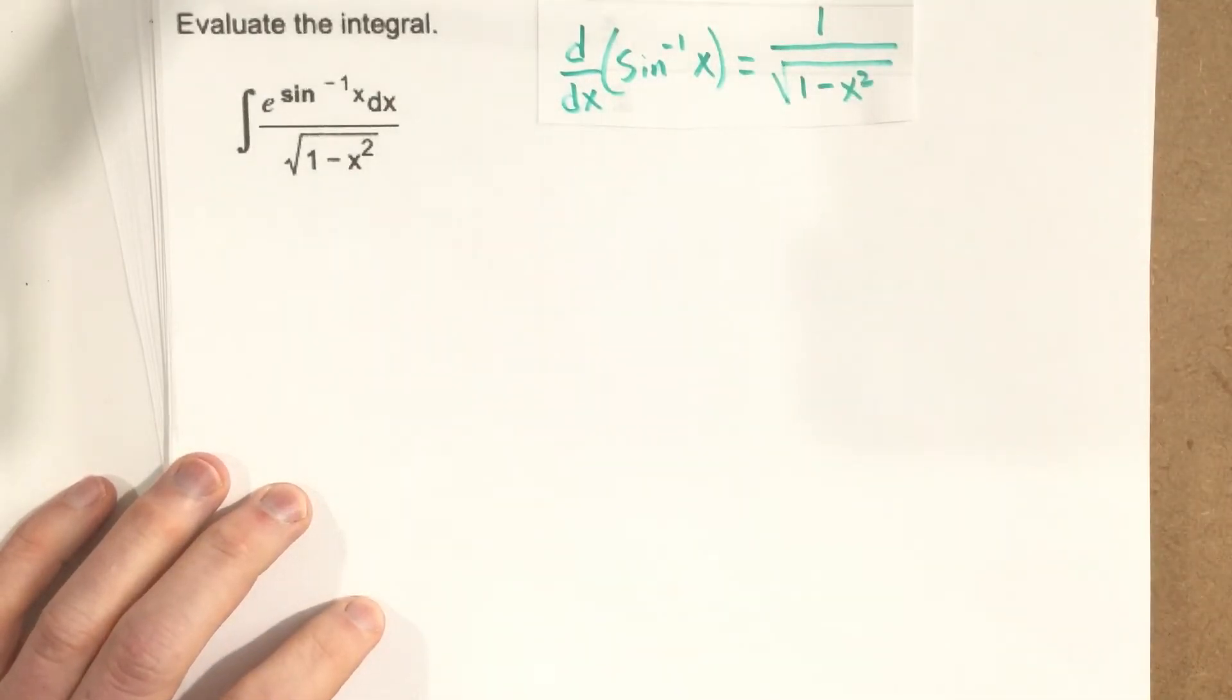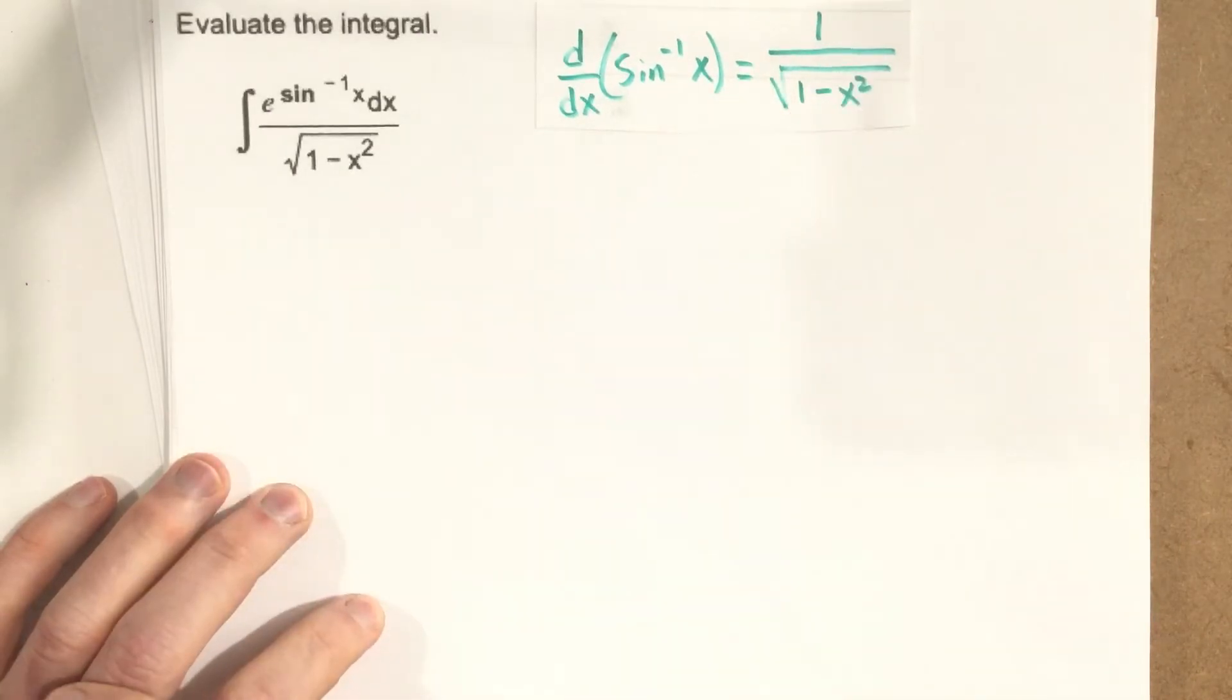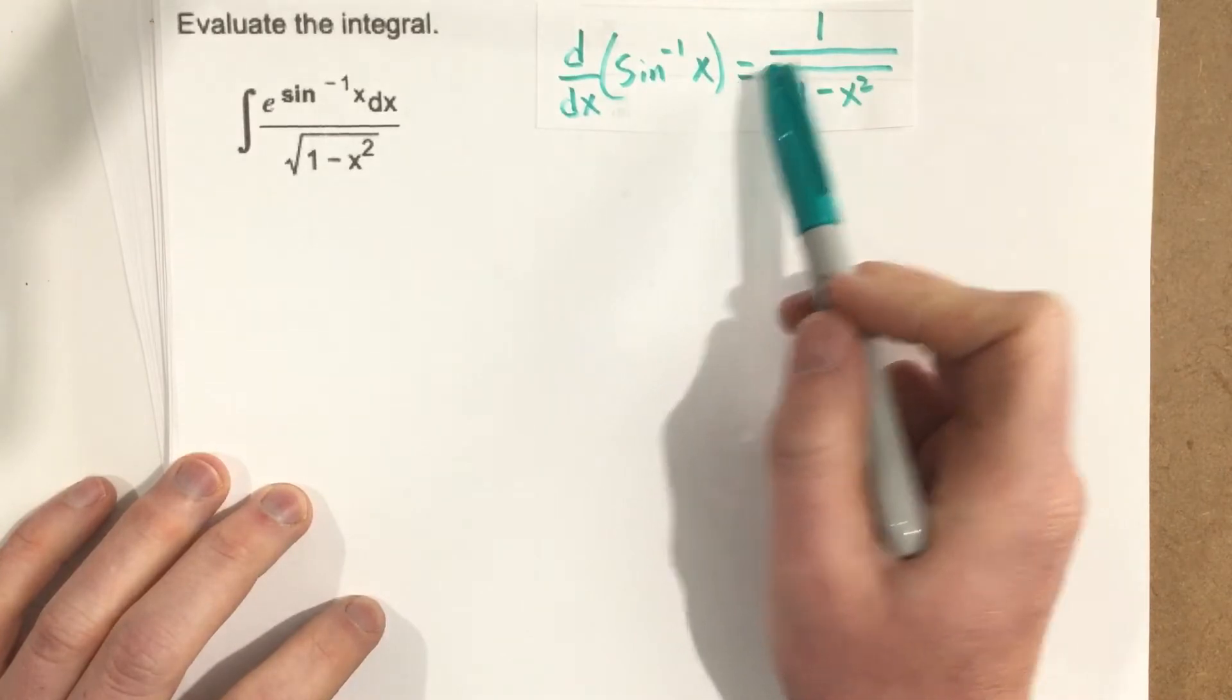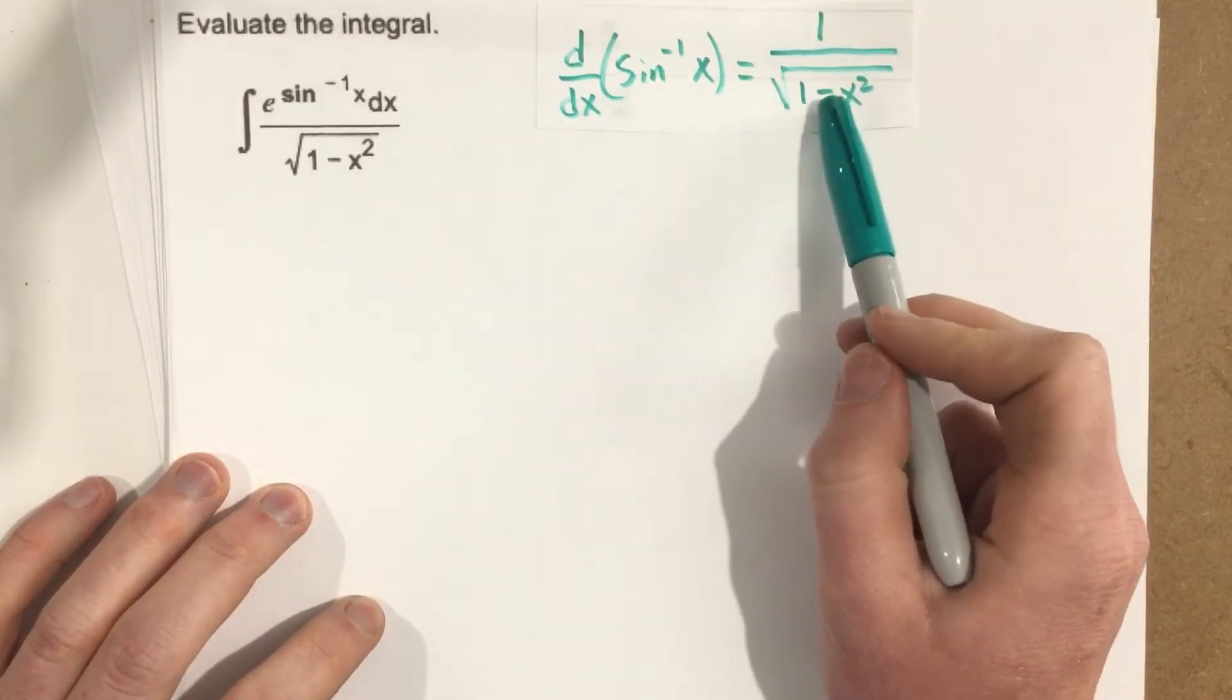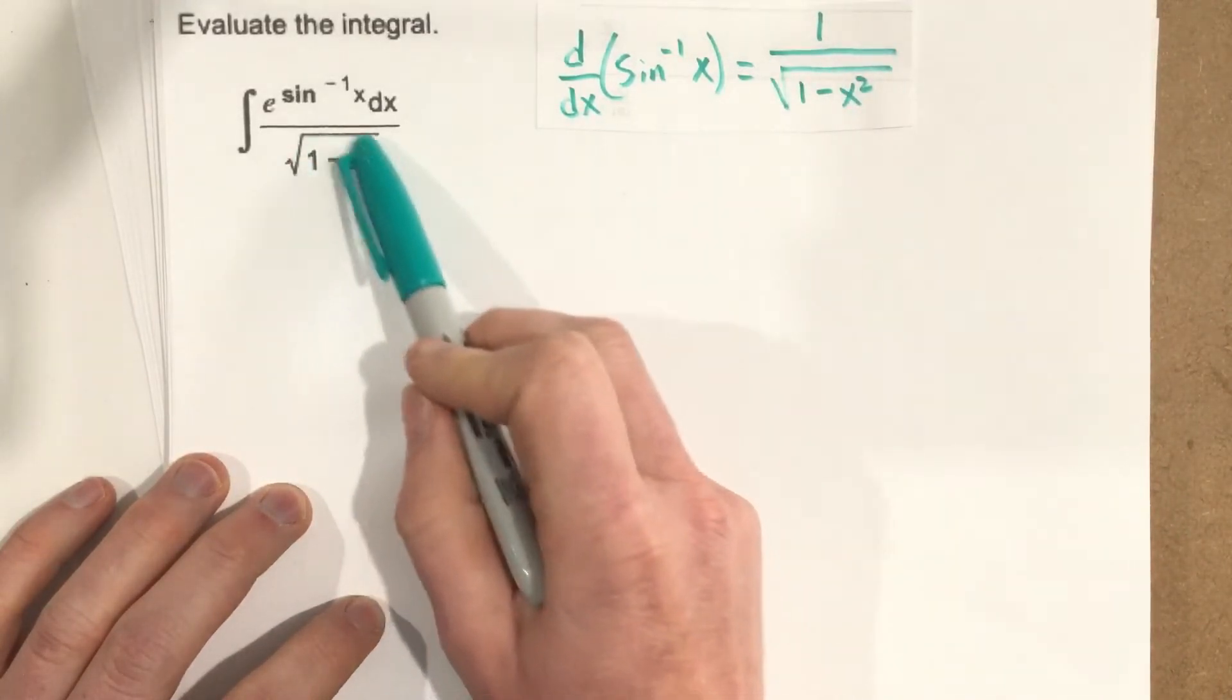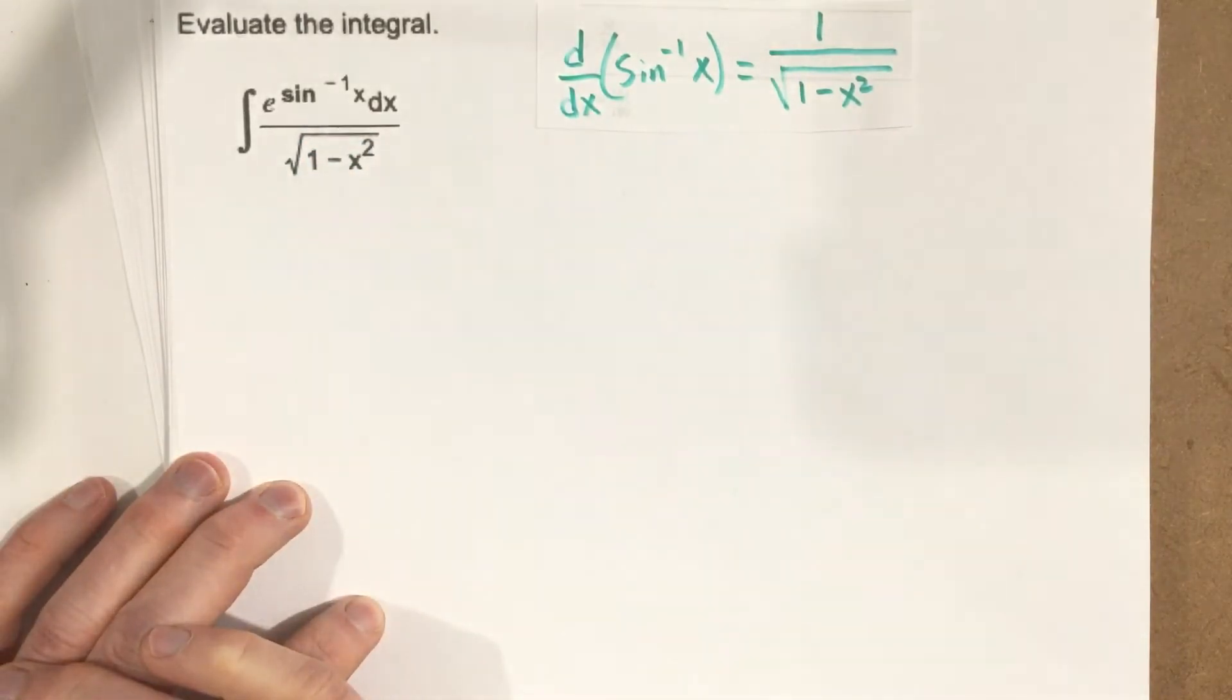In your common derivatives packet that you guys have on Schoology, you'll see that the derivative of sine inverse is equal to 1 over the root of 1 minus x squared. So we're going to actually use this to cancel this root 1 minus x squared here. You can kind of see where this would go in this problem.